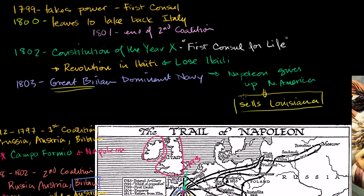A combination of Great Britain having this dominant navy and the slave revolt in Haiti ended up with the United States being able to acquire what's now the middle third of the continent. These things in history — and they're not small things — lead to very tremendous changes in our modern world.